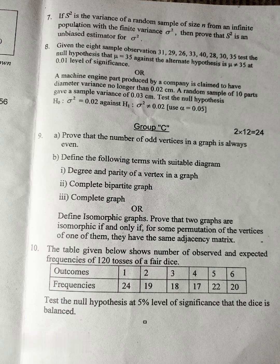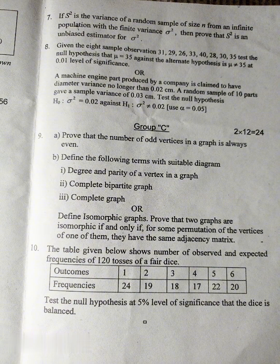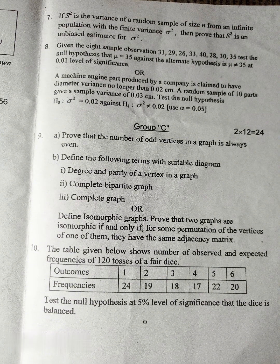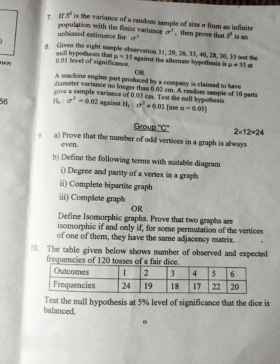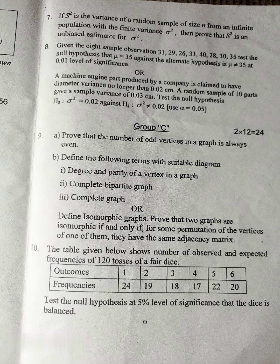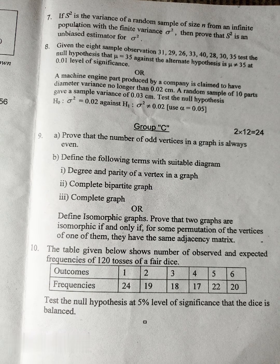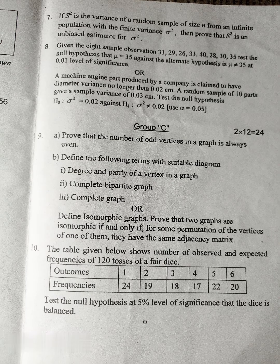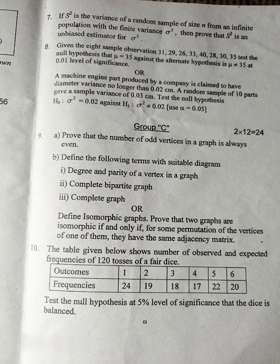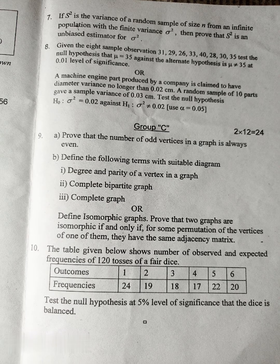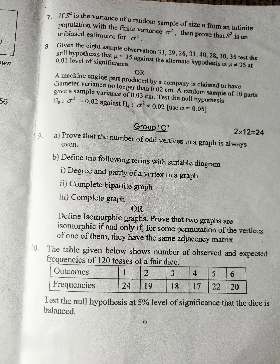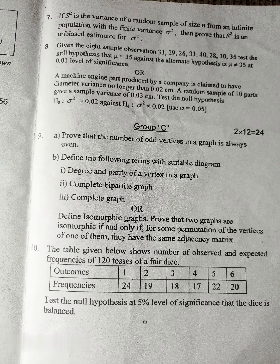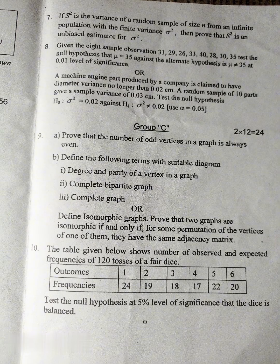A machine engine part produced by a company is claimed to have diameter variance no longer than 0.02 cm. A random sample of 10 parts gave a sample variance of 0.03 cm. Test the null hypothesis H0 sigma square equal to 0.02 against H1 sigma square equal to 0.02. Use alpha equal to 0.05. Group C. Question number 9a: Prove that the number of odd vertices in a graph is always even. 9b: Define the following terms with suitable diagram: 1. Degree and parity of a vertex in a graph, 2. Complete bipartite graph, 3. Complete graph, or define isomorphic graphs. Prove that two graphs are isomorphic if and only if, for some permutation of the vertices of one of them, they have the same adjacency matrix.